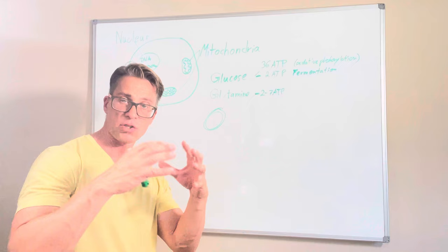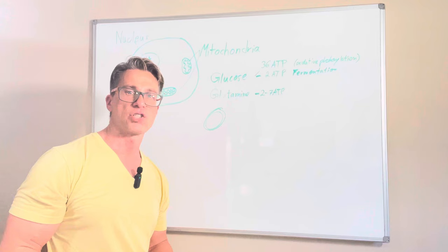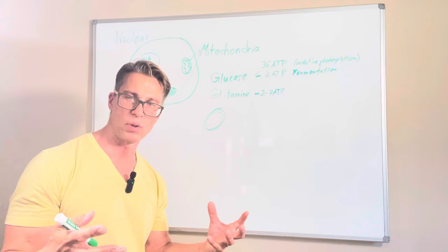So 36 in a healthy cell if oxygen is present, and a cancer cell even if oxygen is present they can only do two ATP. What does that mean? That means cancer cells need a lot of sugar. You might have heard this before: cancer loves sugar, cancer cells thrive on sugar. This is really important for them to exist.